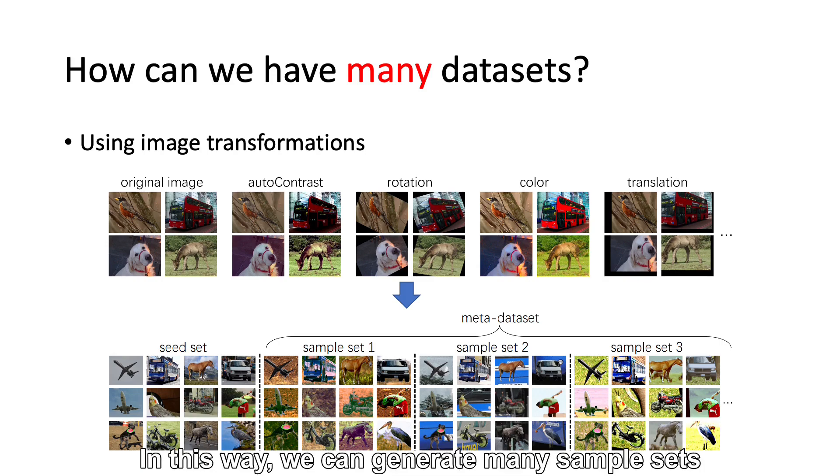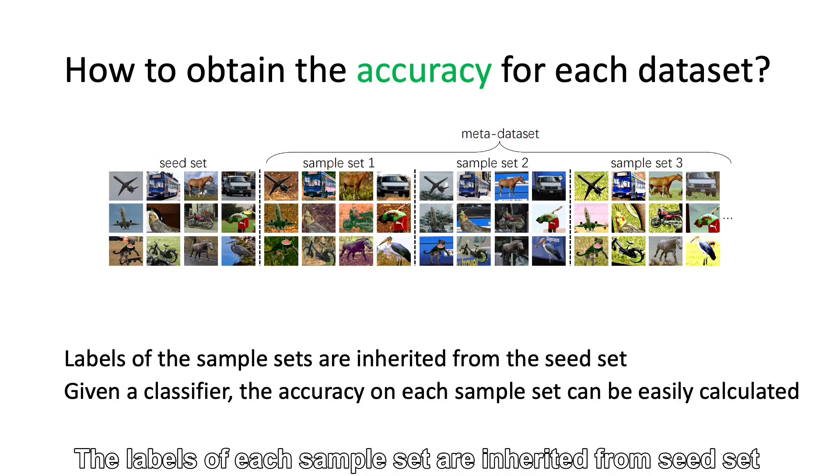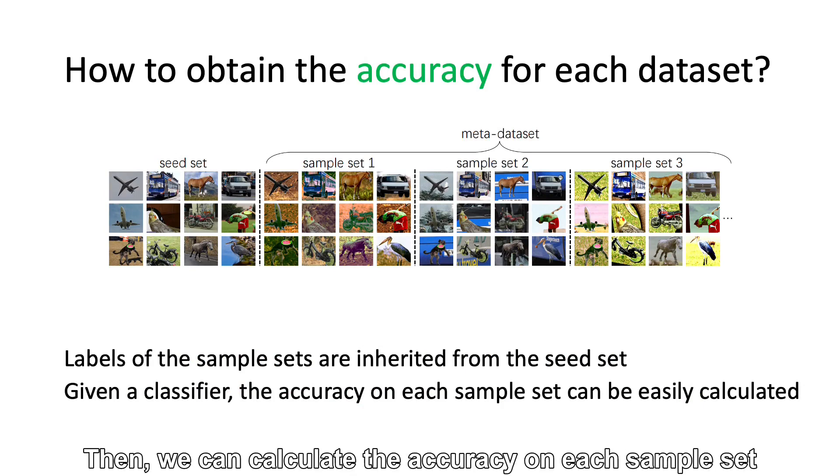The labels of each sample set are inherited from the seed set. Then we can calculate the accuracy on each sample set.